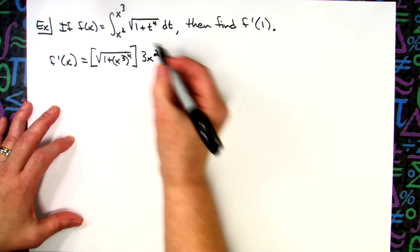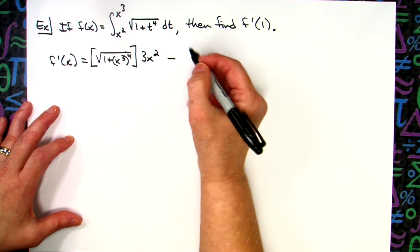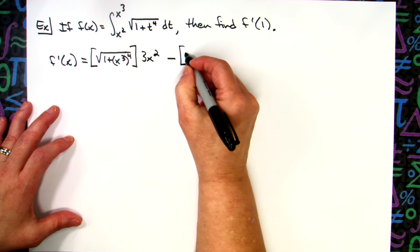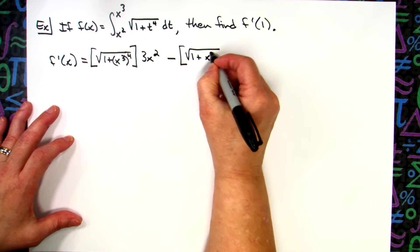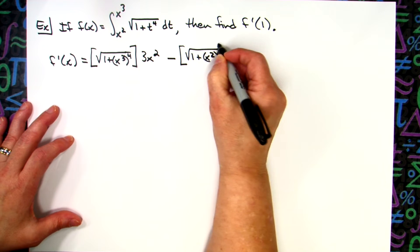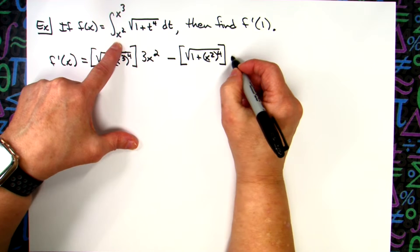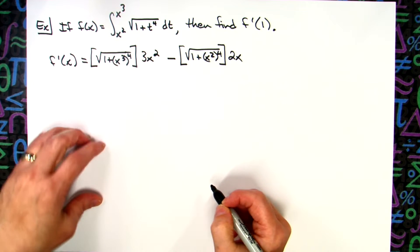So I'll have 3x squared. Subtract. Now do the same thing with the lower limit. Take that lower limit, plug it into the function. So we'll have the square root of 1 plus, plugging in that x squared to the fourth power, multiplying it times the derivative of that lower limit, 2x.